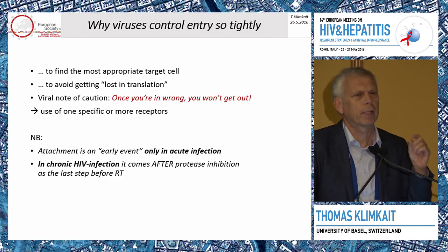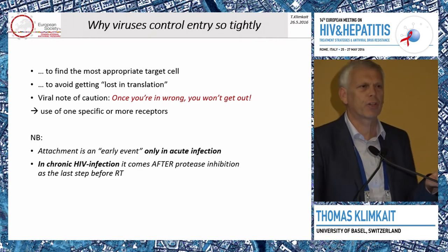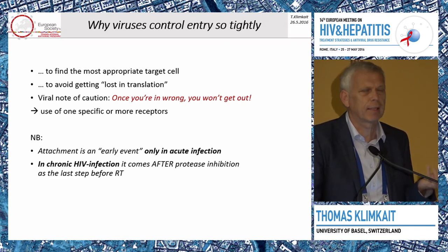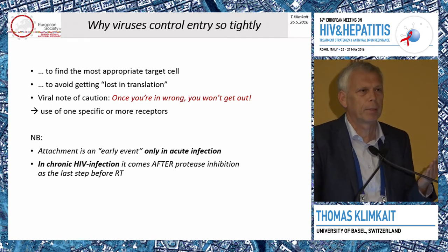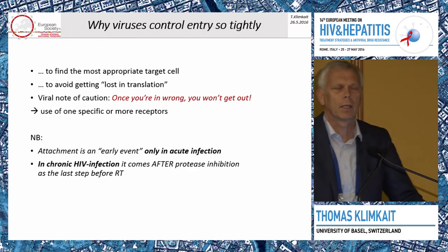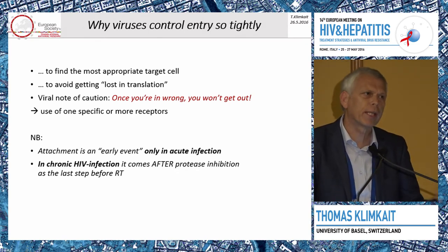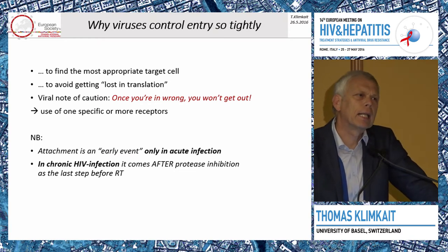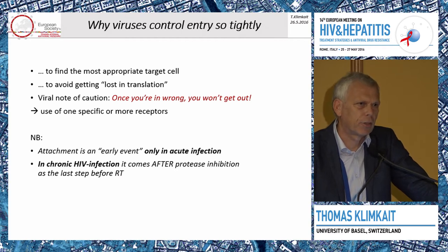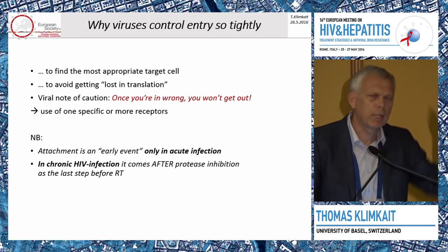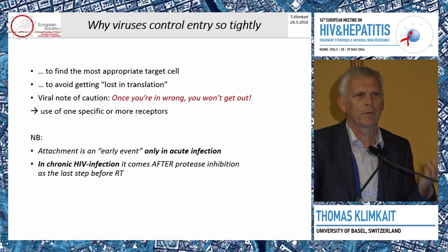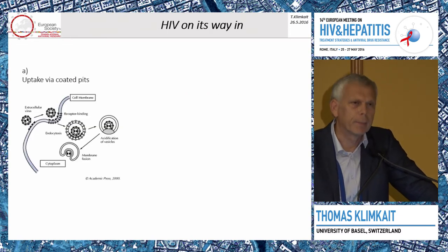Attachment and infection of a cell is a very early event - the first event that ever happens when the virus enters the body for the first time. This is very relevant for PrEP and may be relevant for very early infections before a large body of cells has been infected. However, in chronic infection, it's the last event after protease activation and maturation of the particle, and then only the first step before reverse transcription. In a chronic infection, it's just one step in the rolling life cycle, not any different from any other step inhibiting the viral life cycle.